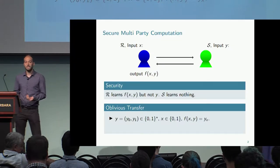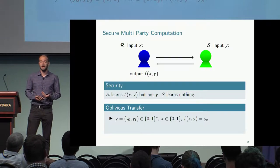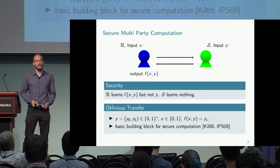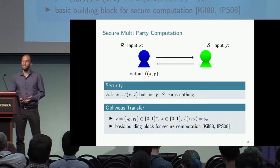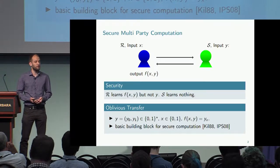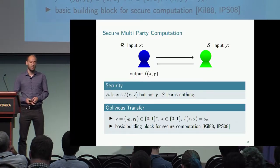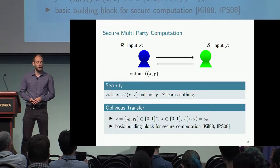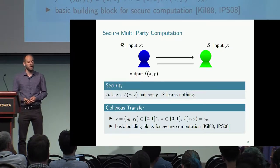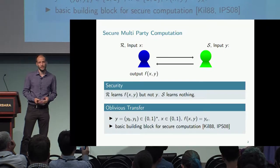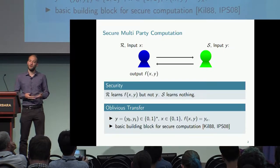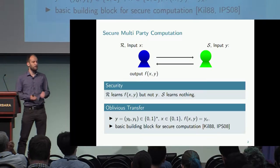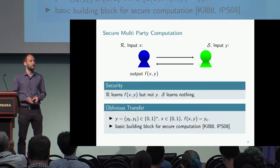This is a very simple functionality. But the very interesting fact is that it is a fundamental building block for realizing secure multi-party computation for any functionality — shown by Kilian and also by Ishai, Prabhakaran, and Sahai. That's remarkable because even though we want multi-party computation for much more complex functionalities, we can really focus on the case of oblivious transfer.